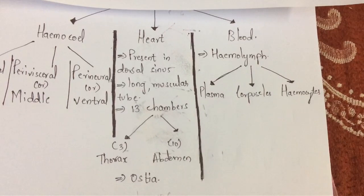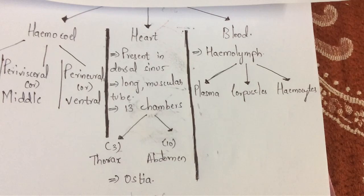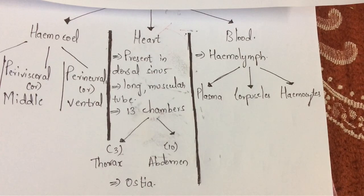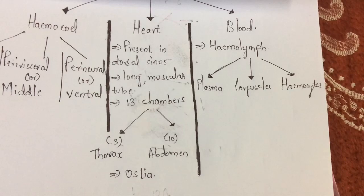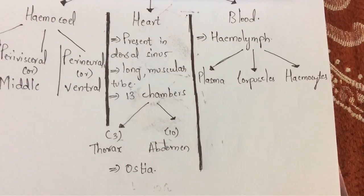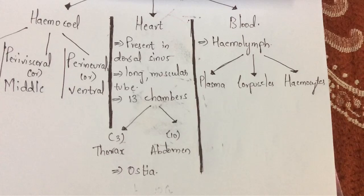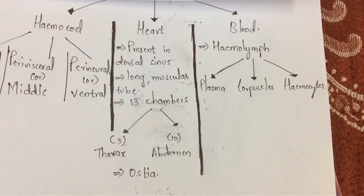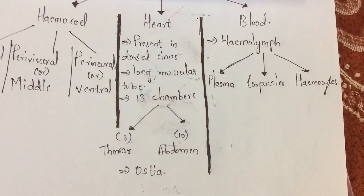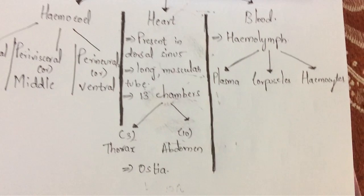Regarding the functions of blood in Periplaneta americana: just as microvilli in the human large intestine absorb nutrients, the blood in Periplaneta americana mainly absorbs food material from the alimentary canal and sends those nutrients to other body parts. Another function is that it collects nitrogenous waste from all parts of the body, in which excretory organs also play a major role.